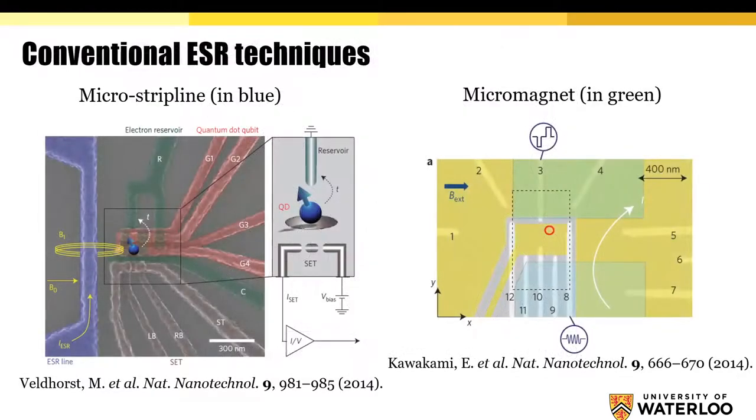The two most common methods to achieve these single qubit rotations are shown in the current slide. The first method is to place a microstrip line close to the device. The second method is to place an electromagnet near the device and apply local voltage pulses to induce electric dipole spin resonance.